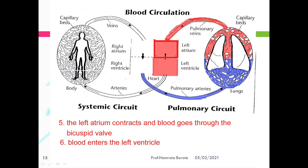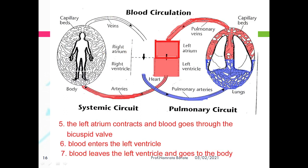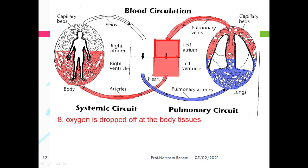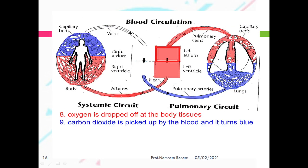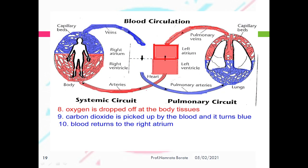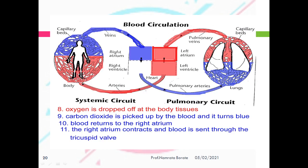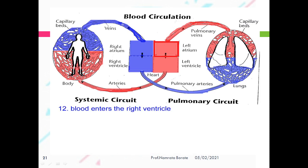From the body, the oxygenated blood is used and converted into deoxygenated blood. This deoxygenated blood is collected and returned to the right atrium via the systemic veins. So the flow of blood from the left ventricle to the right atrium is called systemic circulation. In human beings and higher mammals, both pulmonary and systemic circulation occur — this is called double circulation.